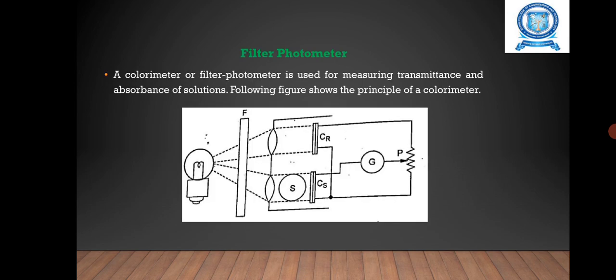Next one is filter photometer. A colorimeter or filter photometer is used for measuring transmittance and absorbance of solutions. The following figure shows the principle of a colorimeter. F selects the suitable wavelength from the light of a lamp.